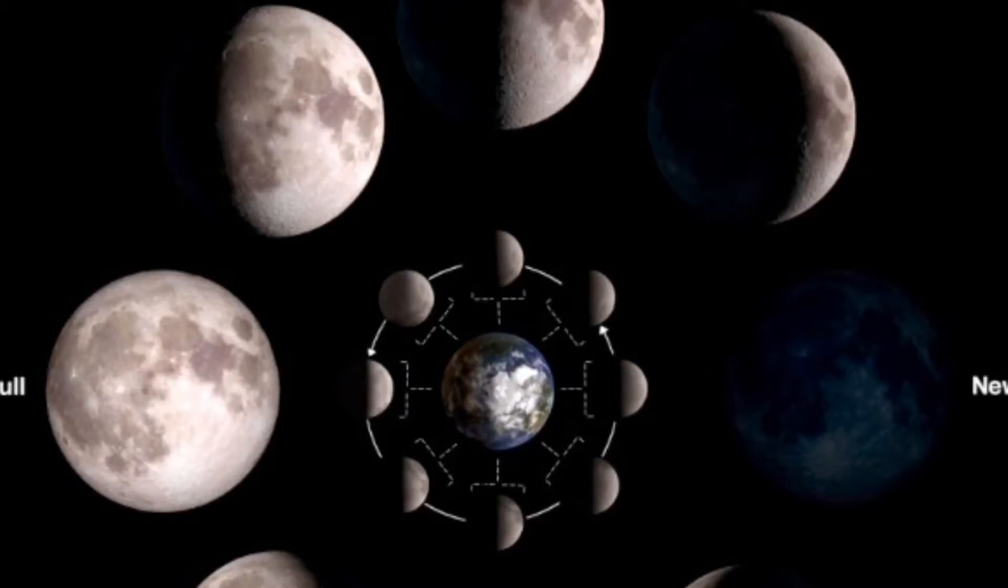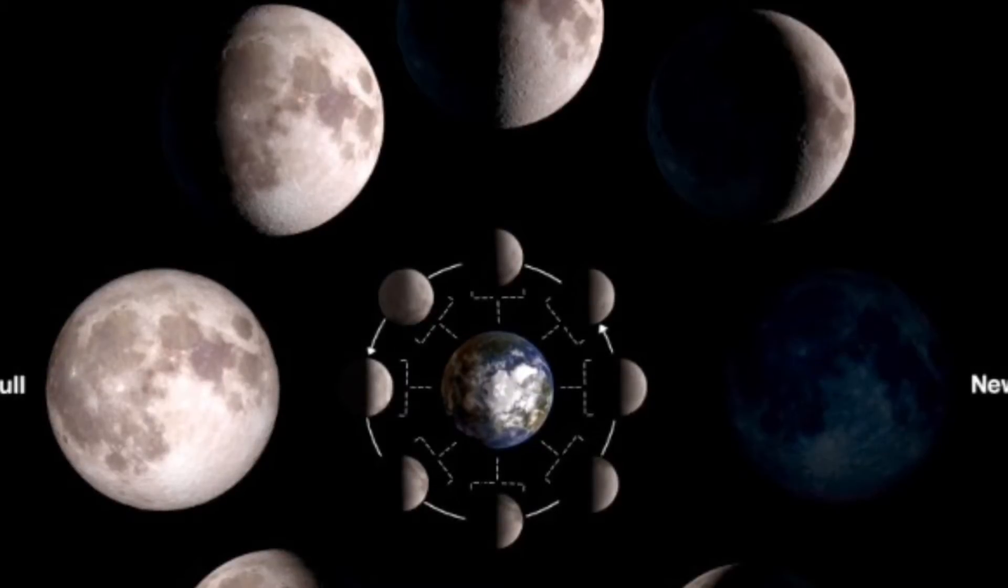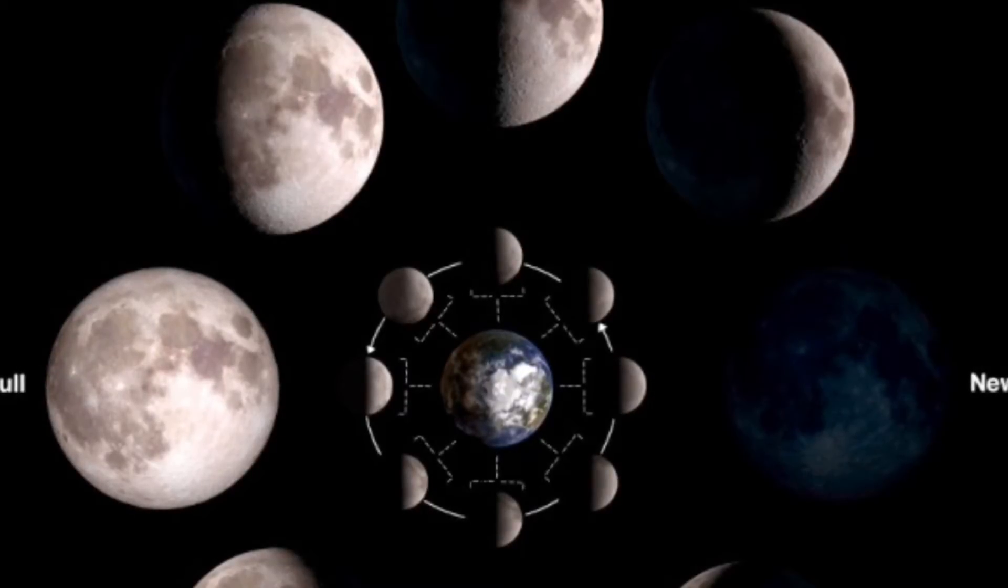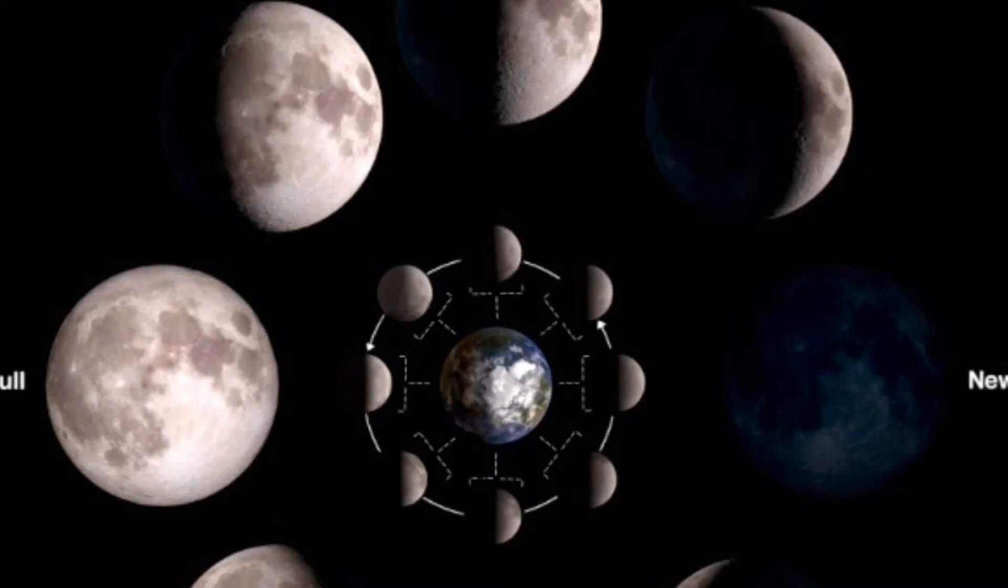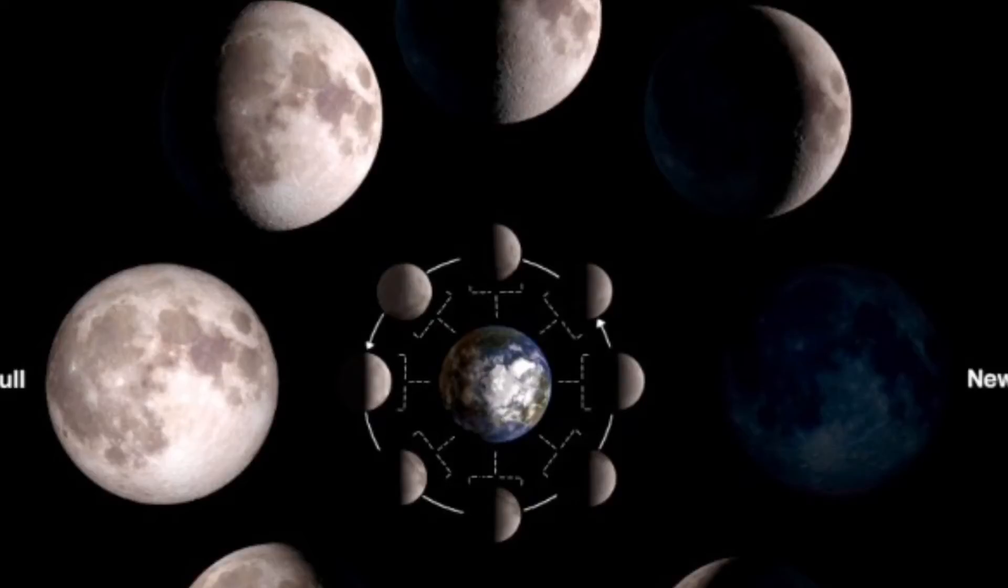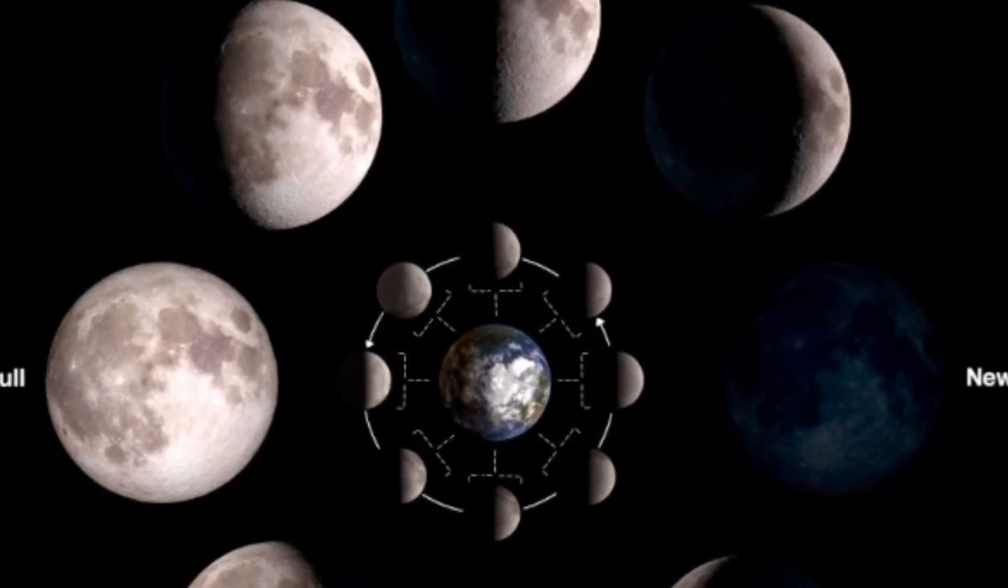A total lunar eclipse has the sunlight completely blocked by our Earth's shadow. A partial lunar eclipse happens when only a portion of the Moon enters the umbra or shadow.